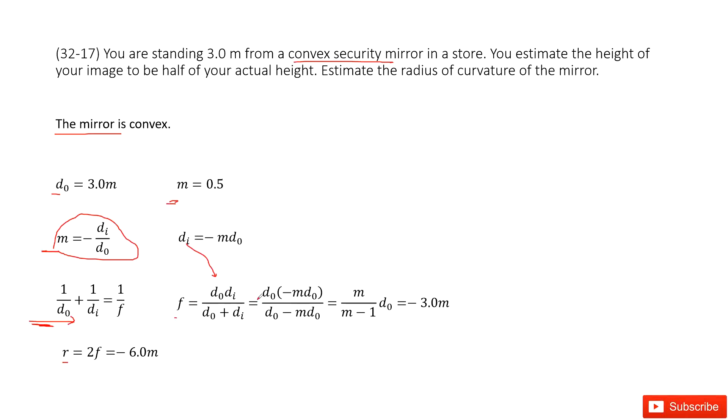Now we can see f can be simplified as this term. Then input all the given quantities. You get the answer. The focal length f is negative 3.0 meters. The radius should be 2 times f, so negative 6.0 meters.